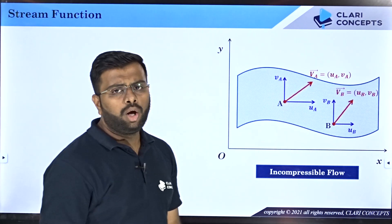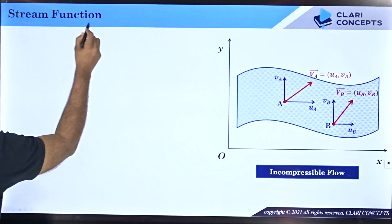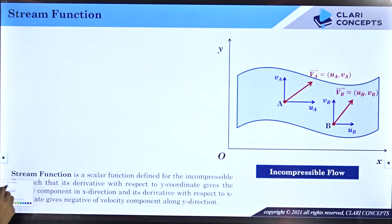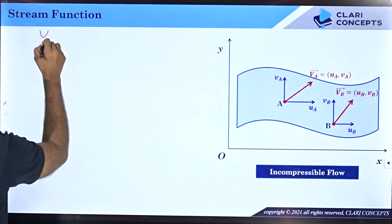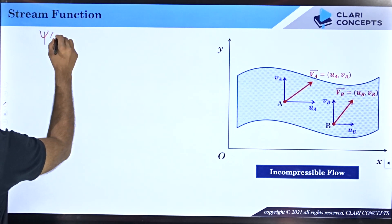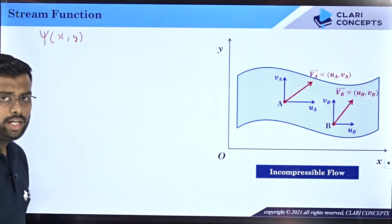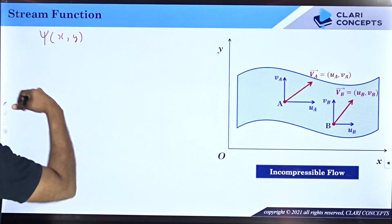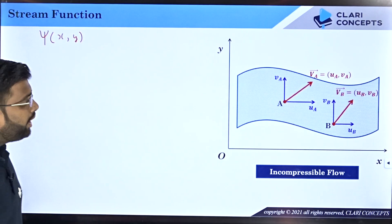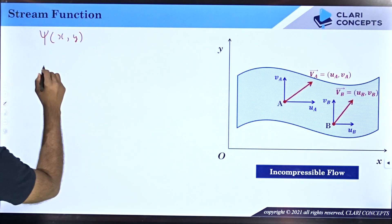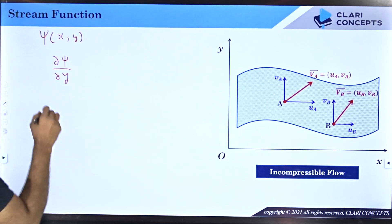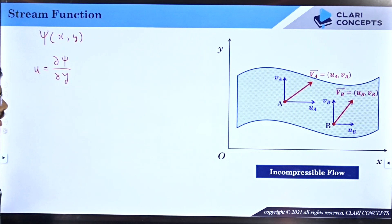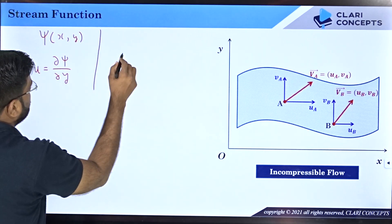Stream function is an important concept. Let me show you: the stream function is represented by the symbol psi (ψ), and it is a function of x and y coordinates. It is defined such that when you differentiate this function with respect to y, you get the velocity component in the x direction — that means u equals ∂ψ/∂y.